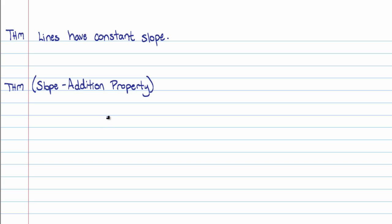Now I want to introduce something that's not usually in a textbook, and this idea is so cool — it's one of the best ideas you'll come across in this lecture. It's called the slope addition property. This is not going to be in a textbook, except for one textbook I know of. The slope addition property is really cool, and I want to demonstrate it before I write it down.